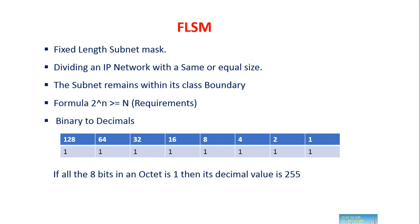FLSM stands for fixed length subnet mask. It divides a large network into equal or same-size logical subnets. The main disadvantage of this method is it won't go beyond its class boundary. The main formula used to do subnetting is 2 to the power of small n greater than or equal to capital N, where capital N is the requirement. Here is the table for converting decimals to binary values.